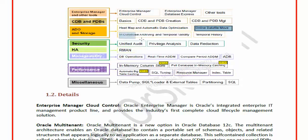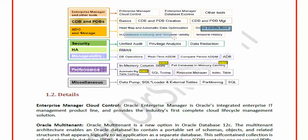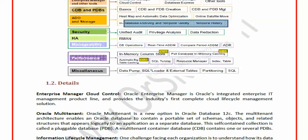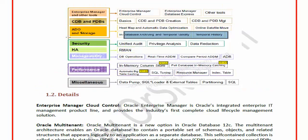In-database archiving, temporal validity, and temporal history are also covered. All of these — Heat Map, ADO, online data file movement, in-database archiving, temporal validity, and history — are part of ADO and Storage, because they all relate to how Oracle stores and manages data in tablespaces and data files.